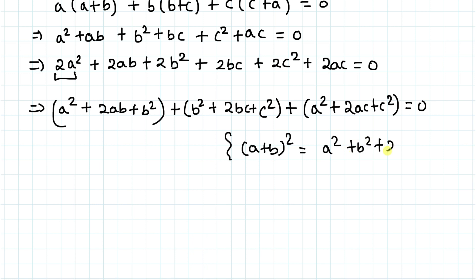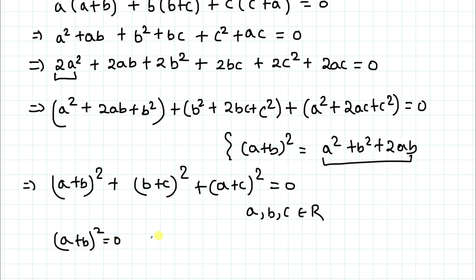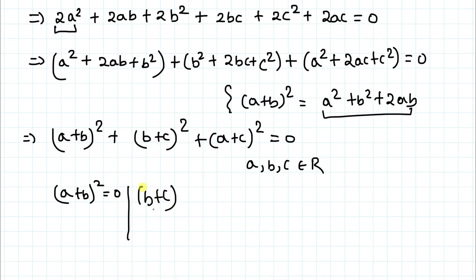Each grouping is in the form of this identity, so we can write: (a+b)² + (b+c)² + (a+c)² = 0. Since a, b, c are all real numbers, all three terms are non-negative. A sum of squares equaling zero means each term must equal zero: (a+b)² = 0, (b+c)² = 0, and (a+c)² = 0.